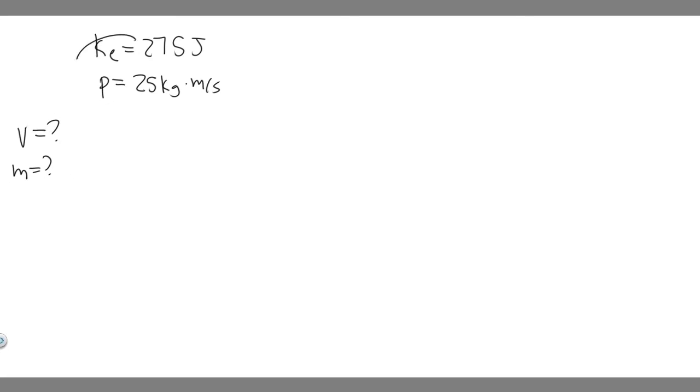The first thing you've got to do is realize the formulas for both of these. The formula for kinetic energy is 1 half mv squared, and then for momentum, it's just p equals mv. The momentum is just mass times velocity.